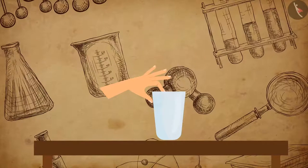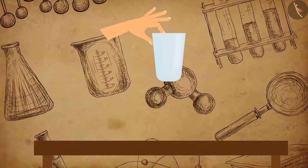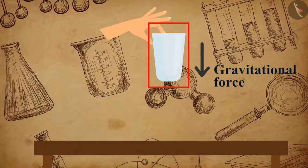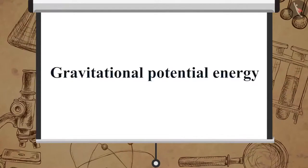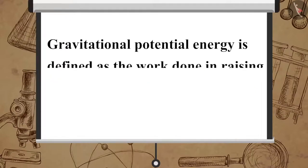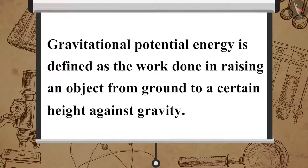Now let us understand what happens to the potential energy of an object when raised to a certain height. When an object is raised to a certain height, work is done on it by us against gravitational force, due to which the object possesses more energy when raised to a greater height. This energy possessed by the object is termed as gravitational potential energy, defined as the work done in raising an object from ground to a certain height against gravity.